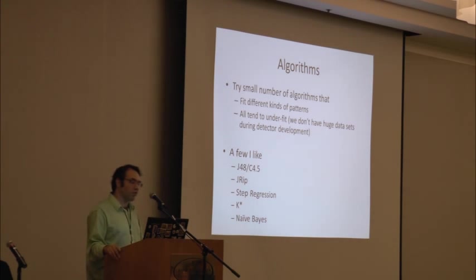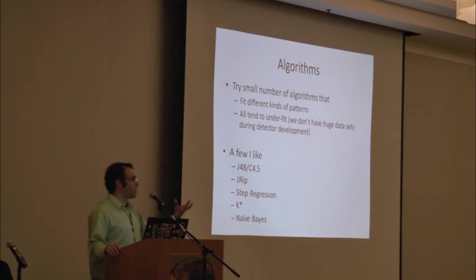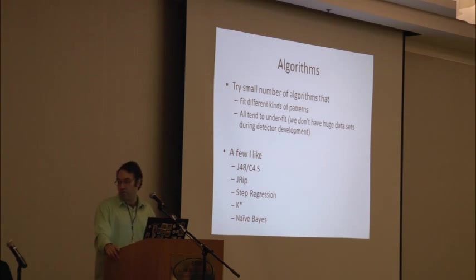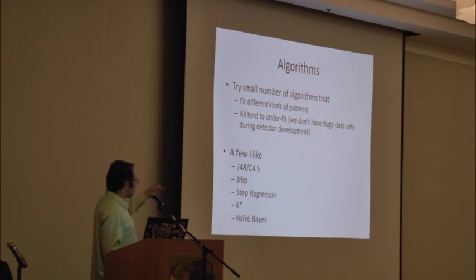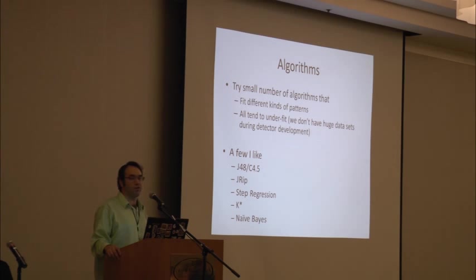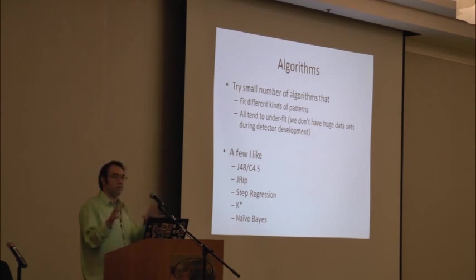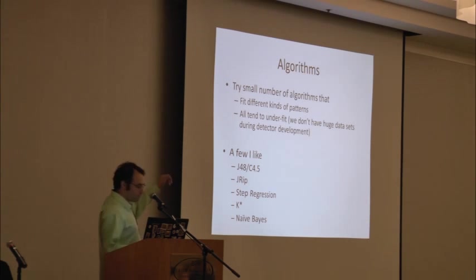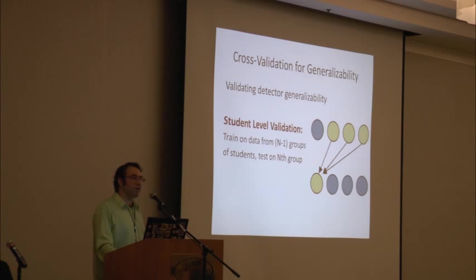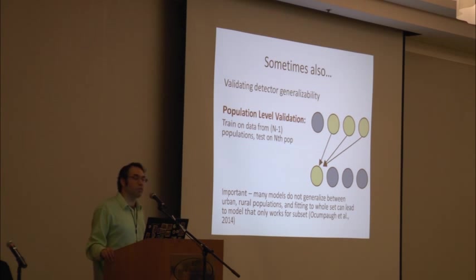For the data mining approach, we try a small number of algorithms that fit different kinds of patterns and that all tend to underfit. Underfitting means we're not squeezing out the last bit of variance, getting a model that's maybe not as good as it could be. Models like deep learning really try to squeeze out all the variance. We tend to use older 1980s–1990s algorithms that leave some variance on the table, but in return aren't as likely to fit to noise in the relatively small data sets — only thousands of observations — we use to build our models. We then validate that models work on entirely new students, new content, and that they transfer between populations.